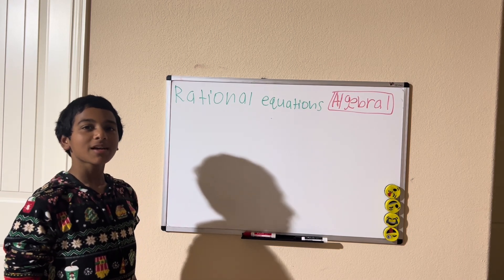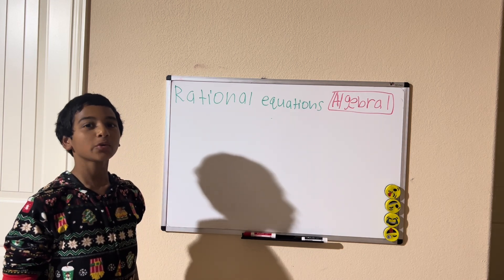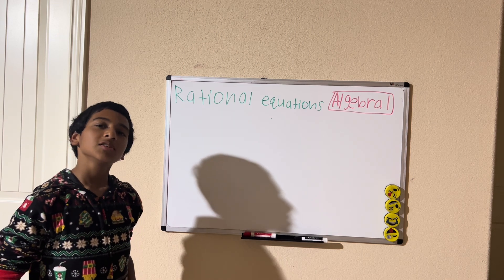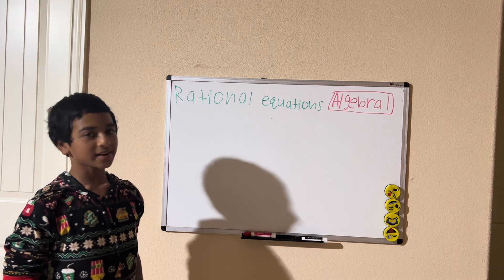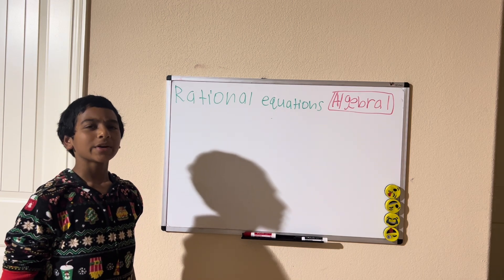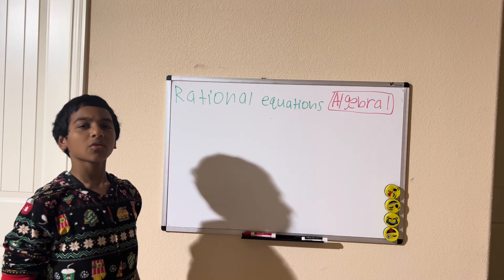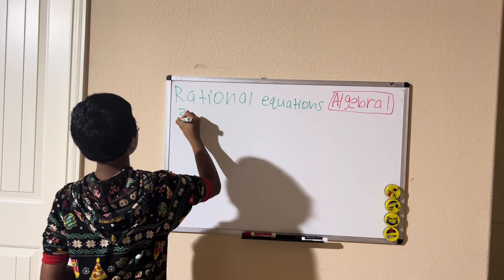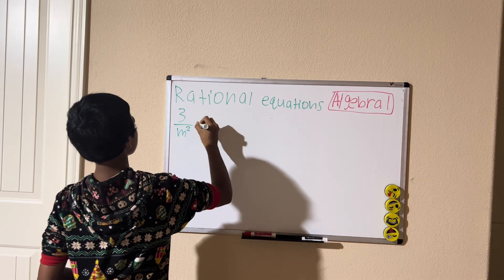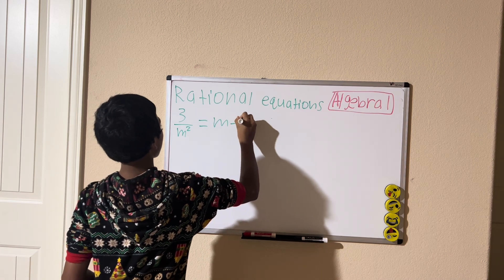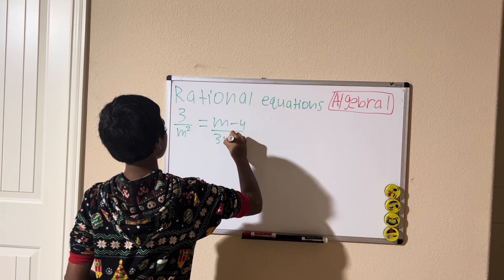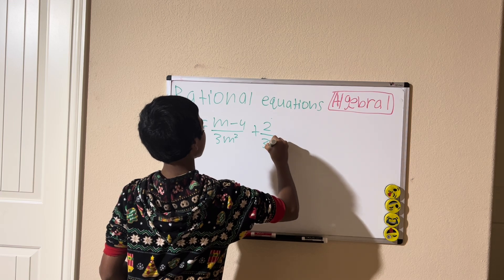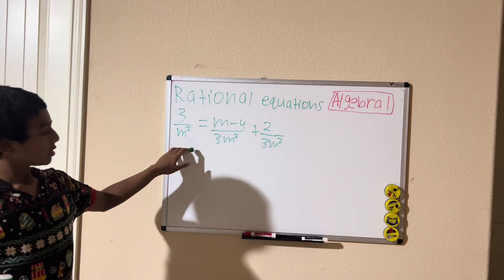Welcome back to my channel. In this lesson of Algebra 1, we're going to be solving rational equations. In the last video we solved radical equations which has a square root, but today we're solving rational equations. A rational equation is an equation where both the numerator and denominator are polynomials or rational expressions. Here's an example: 3 divided by m squared equals m minus 4 divided by 3m squared plus 2 divided by 3m squared.